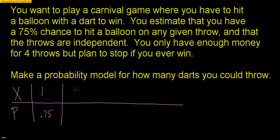I could end up throwing two darts, but what has to happen for me to throw two darts? Well, I must have missed the first time, but then I did hit the second time. That would be 0.25 times 0.75 — that's a miss and then a hit. 0.25 times 0.75 gives a total of 0.1875. I need both of those things to happen — this is an 'and then' statement. I need to miss and then make. That is the only way I could throw two darts.